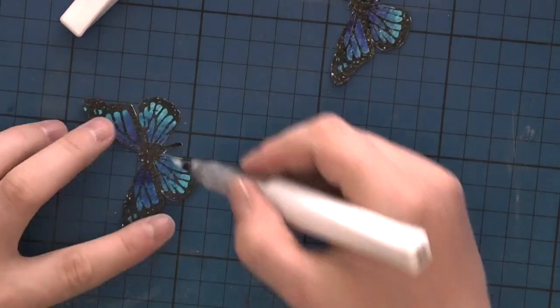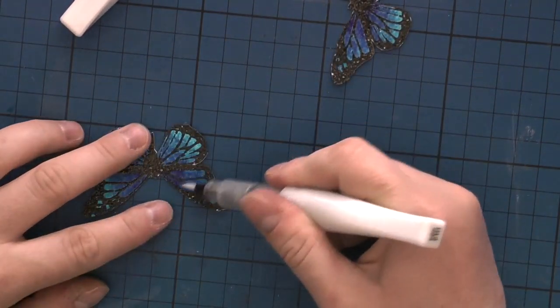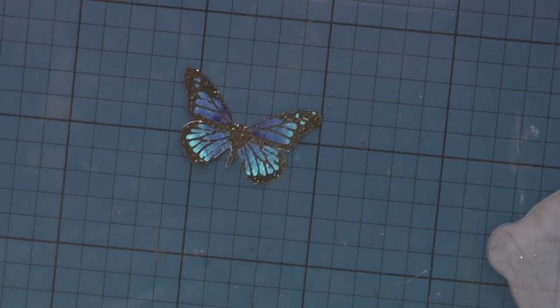Now I'm using clear Wink of Stella to cover up the wings of my butterflies. I already fussy cut them.